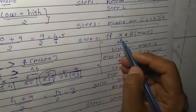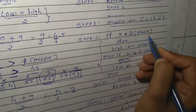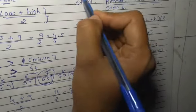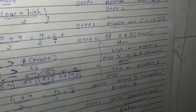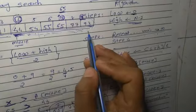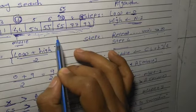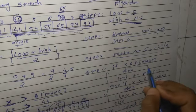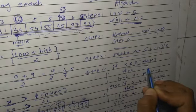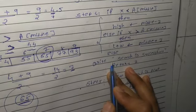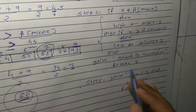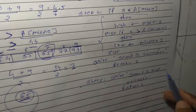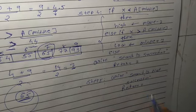If x is less than A[middle], then set high to middle minus 1, decrementing from there — so we skip that portion. If the condition provides output, meaning once data is finally searched, then: search is successful — return value 1. Otherwise: search is not successful — return value 0.